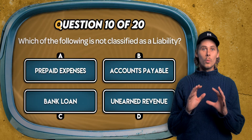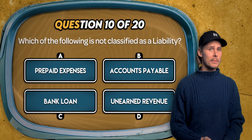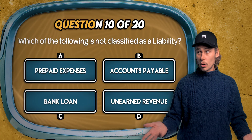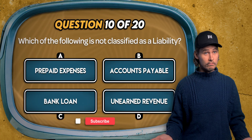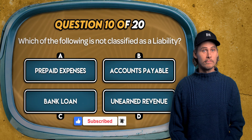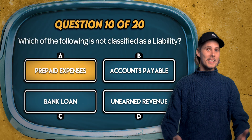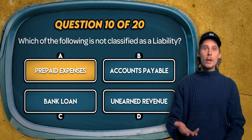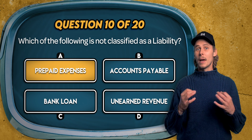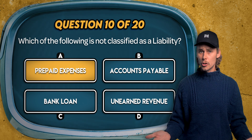Question 10. Which of the following is not classified as a liability? Prepaid expenses, accounts payable, a bank loan, or unearned revenue? It's A. Prepaid expenses are in fact a type of asset. They represent payments made in advance for goods or services to be received in the future.